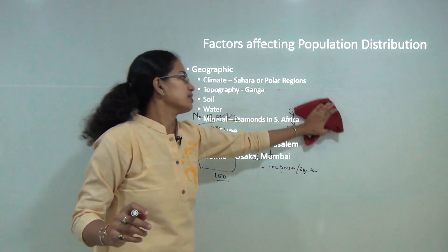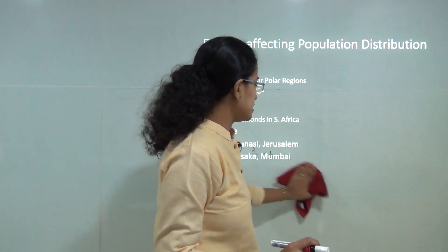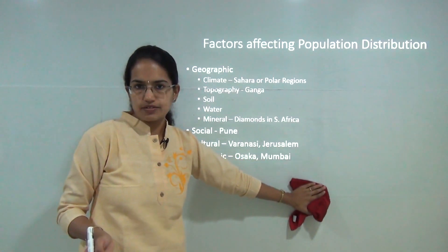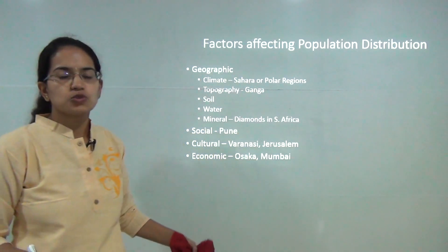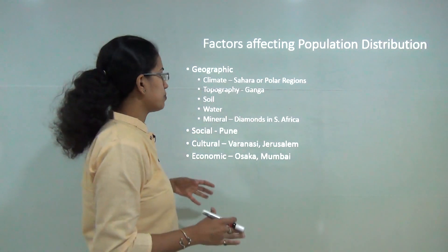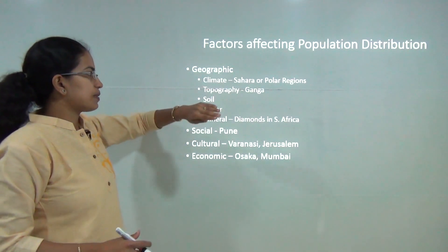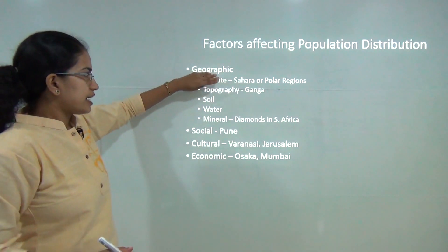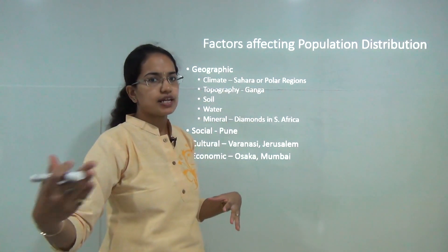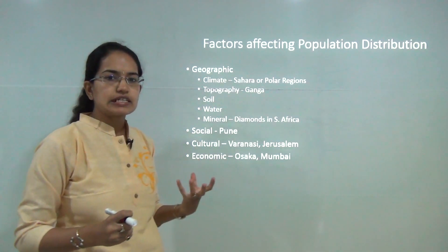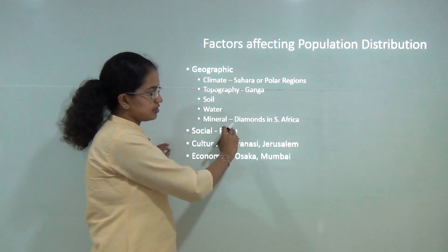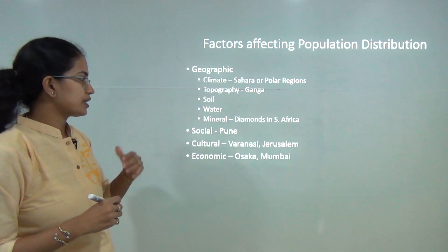What are the factors that affect population distribution on Earth? If there is a desert, frozen land, or glacier region, there would be very little or nominal population. However, if it's a fertile area with good agriculture and economic activity, you'd have a higher population. Geographic factors are the primary responsible factors for distribution, governed by climatic conditions, topography, fertile riverine tracts, soil fertility, water availability, and the presence of minerals — which implies more economic activity in terms of mining.